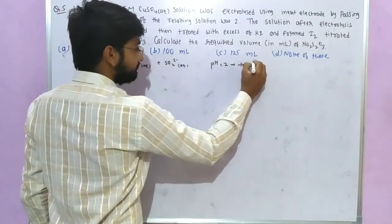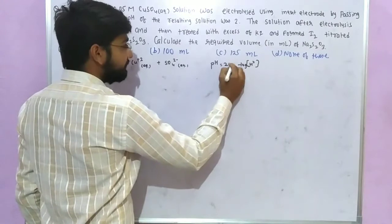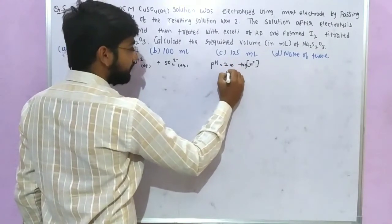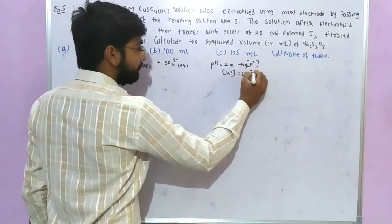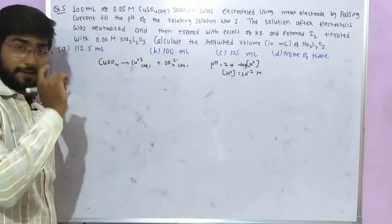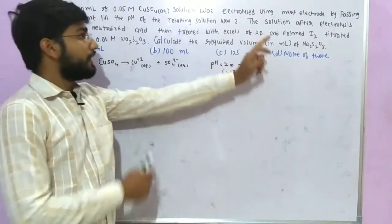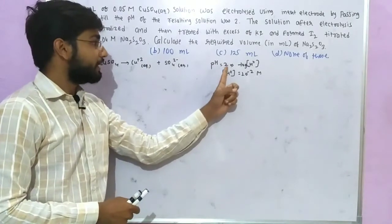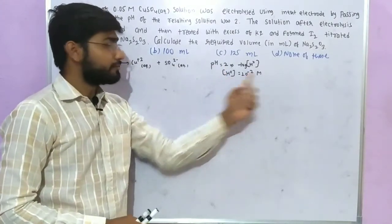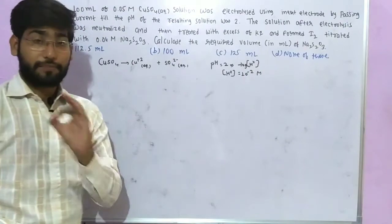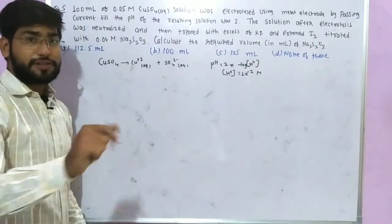From the pH formula: pH = −log[H⁺], if pH = 2, then the concentration of H⁺ in the solution is 10⁻² molar. So after electrolysis, the H⁺ concentration in the solution is 10⁻² molar. This means H⁺ ions were produced during the electrolysis process.